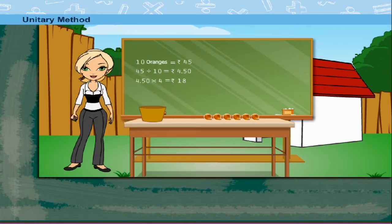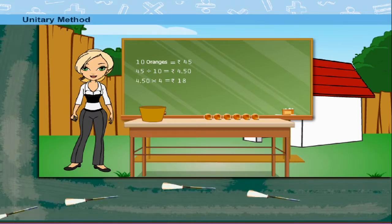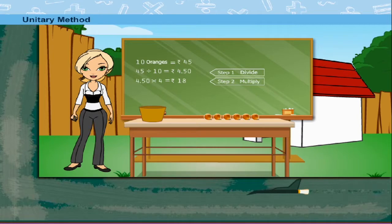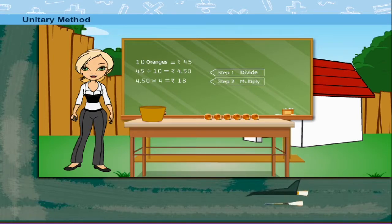Rosie ma'am explains that this is called the Unitary Method. Step 1 is to divide and Step 2 is to multiply. That was simple, ma'am.